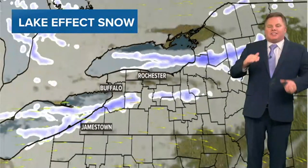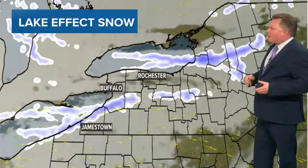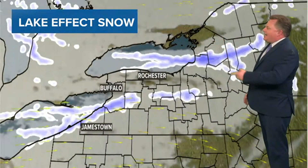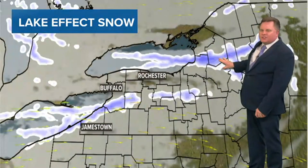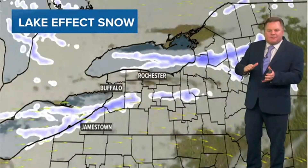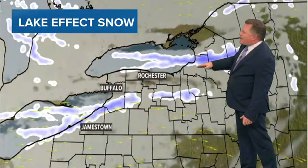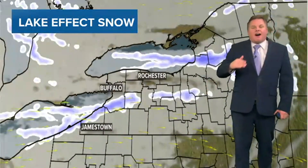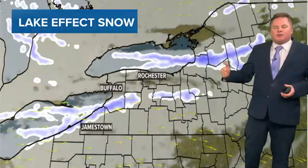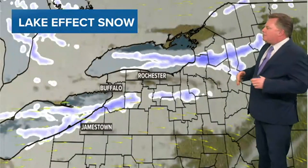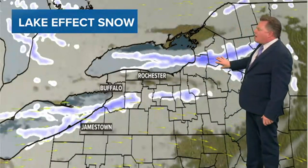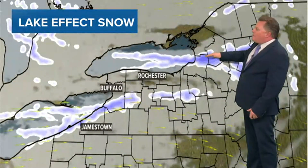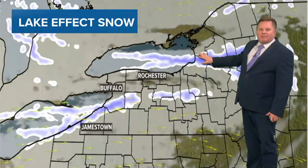Lake effect snow is a focused area of snow downwind of one of the Great Lakes — Lake Ontario and Lake Erie. It comes in the form of narrow bands of intense snow, but it's very focused. Oftentimes the bands are only five to maybe 25 miles wide. They can wobble a little bit, but deposit large amounts of snow in one area with very little snow on either side of it.